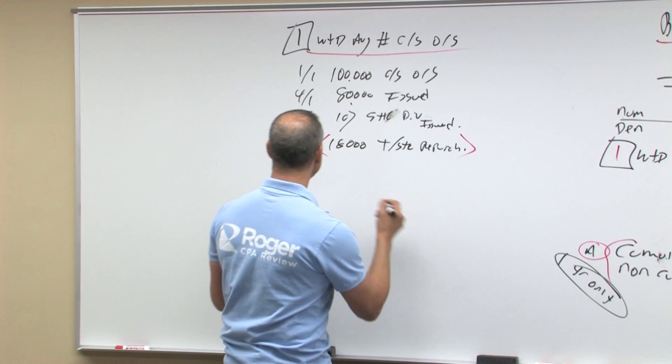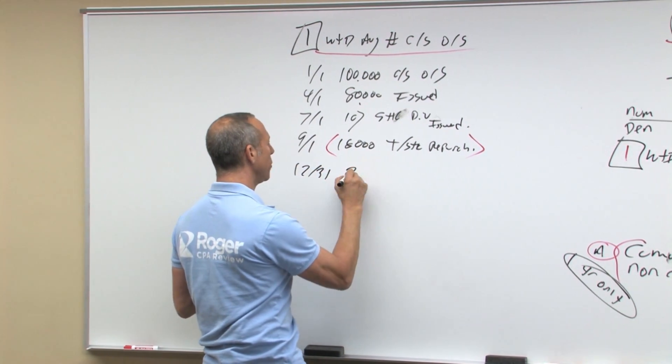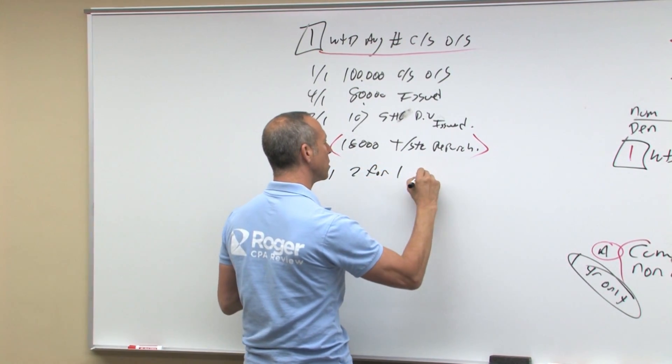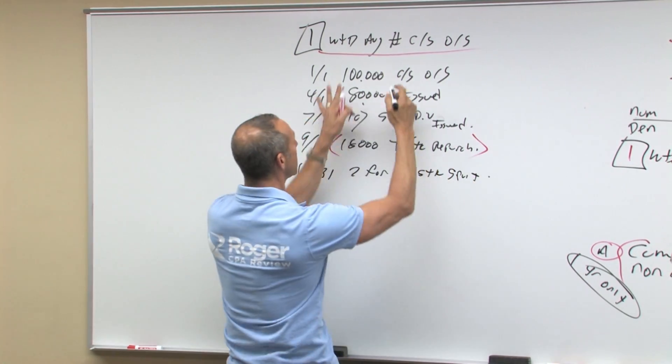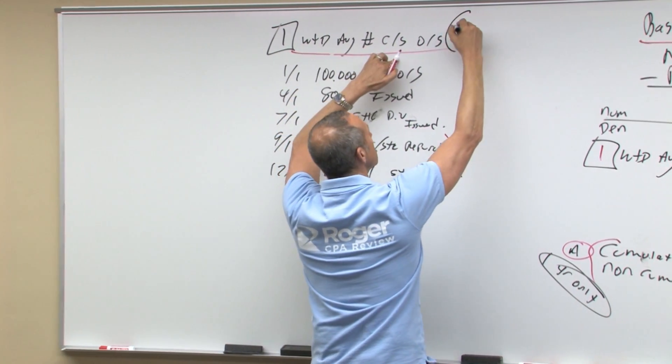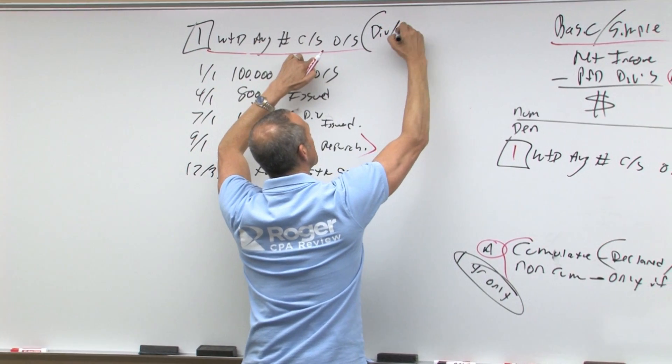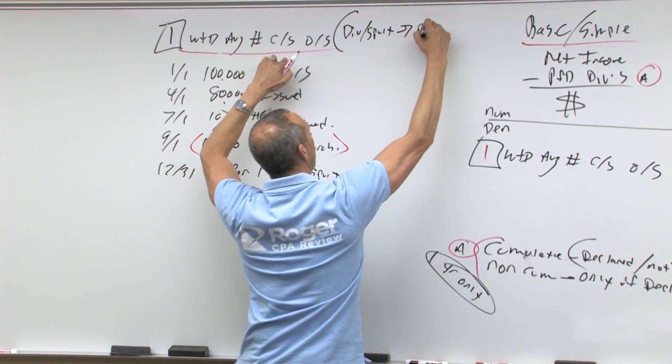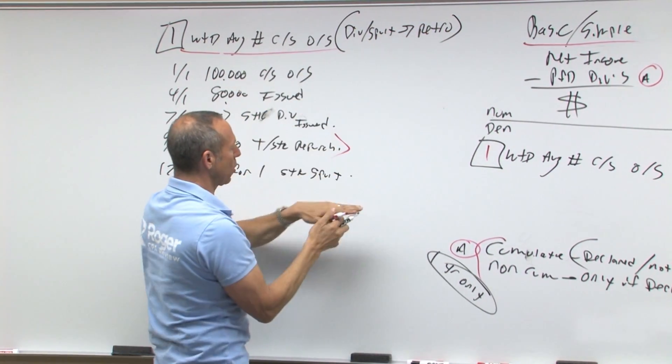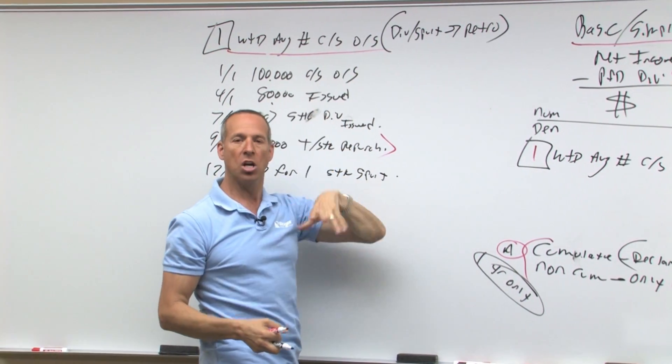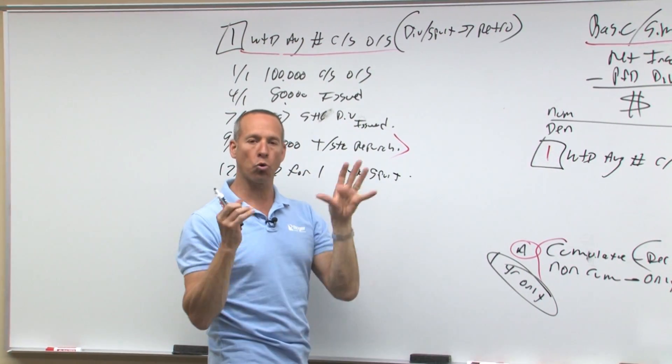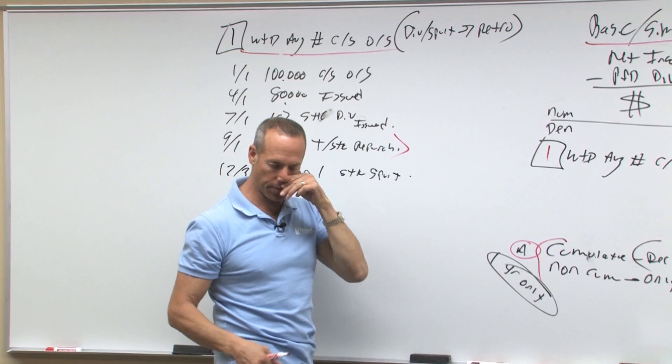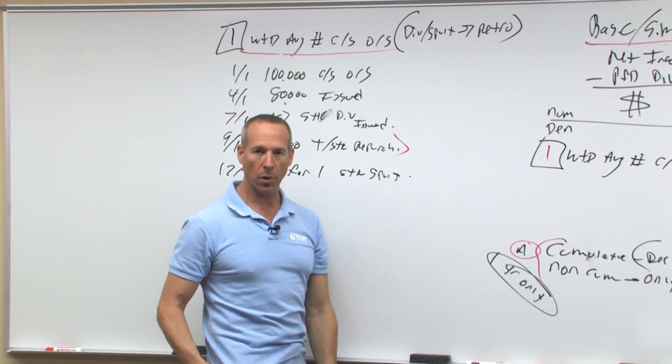Then on December 31st, let's do a two for one stock split. Now, the key here is dividends and splits are done retroactively. In other words, as if they happen at the beginning of the year. Dividends and splits are done retroactively, as if they were done at the beginning of the year.